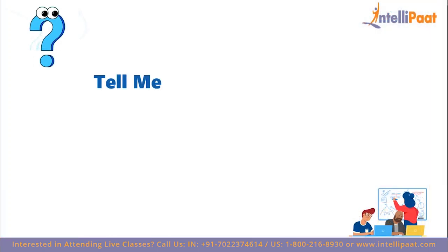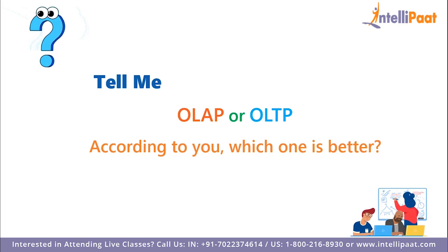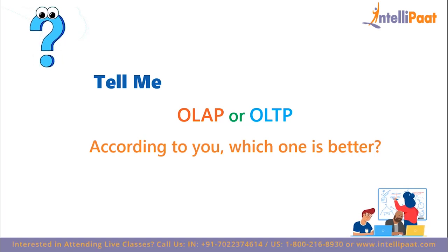Which one is better? OLAP is a historical multi-dimensional data retrieval system used to retrieve data for analysis, helpful in decision making, whereas OLTP is an online data modification system. OLAP creates a single platform for all types of business analysis needs such as planning, budgeting, analysis, and forecasting. OLTP systems are used for day-to-day transactions. OLAP is characterized by a large volume of data, whereas OLTP is characterized by a large number of short online transactions. Choosing one over another totally depends upon the user's requirement, as both work for different purposes.